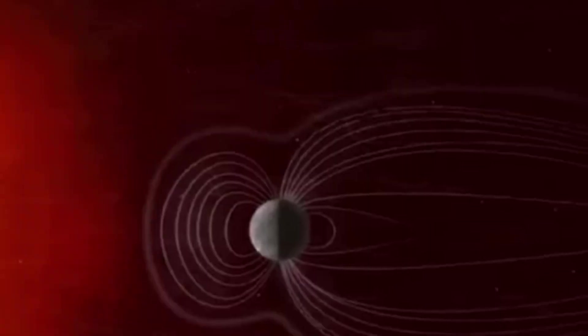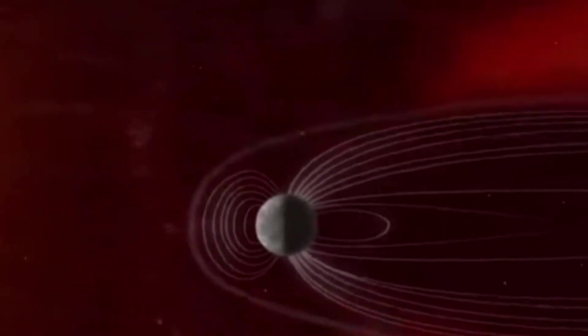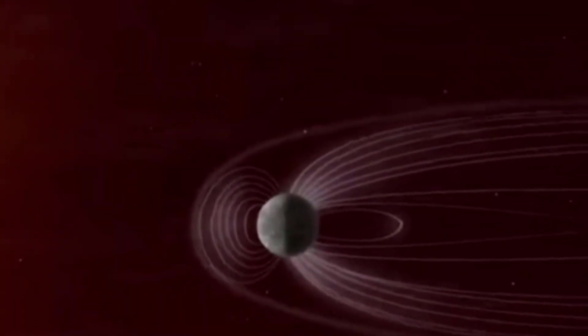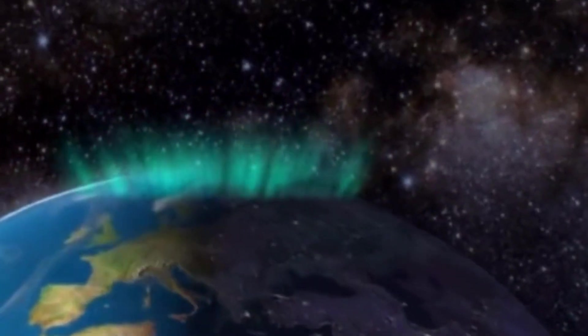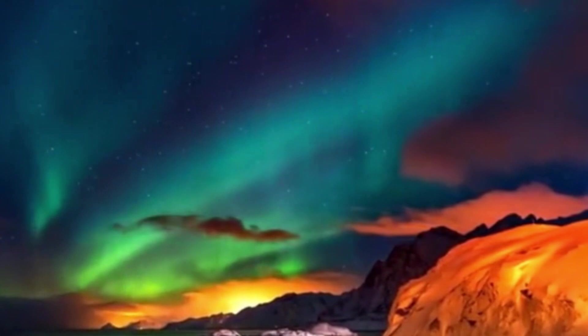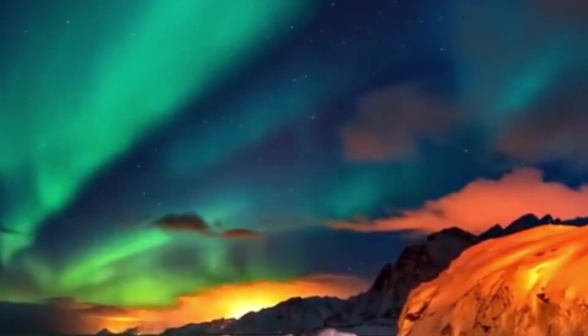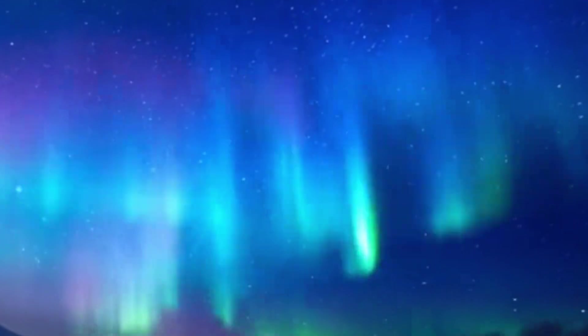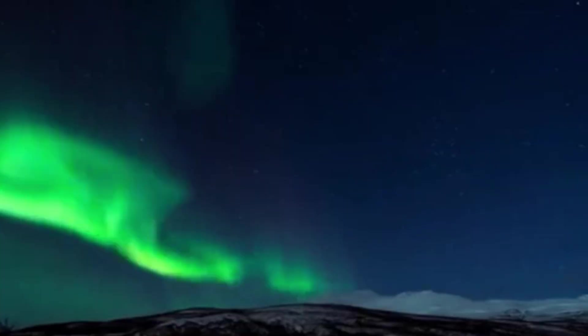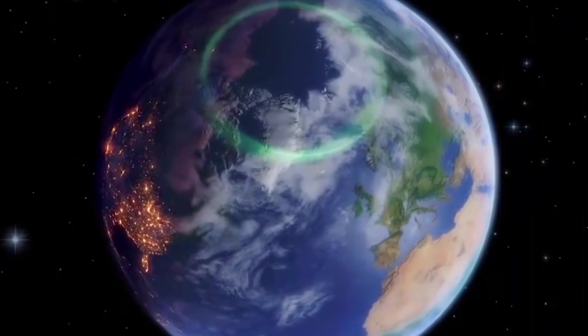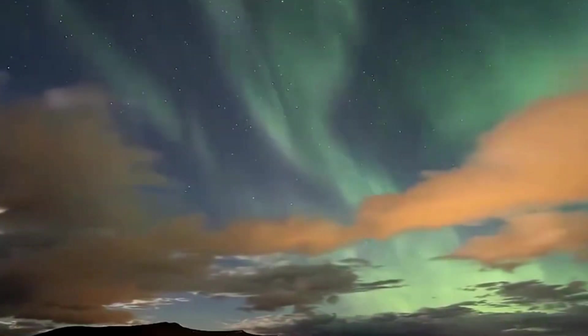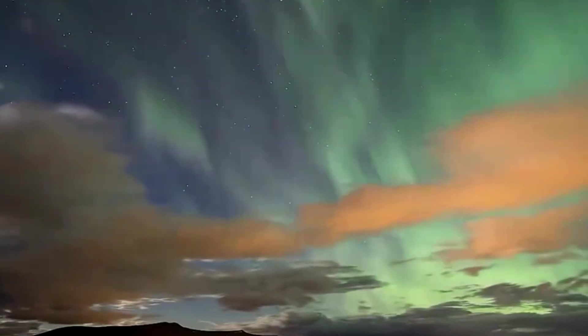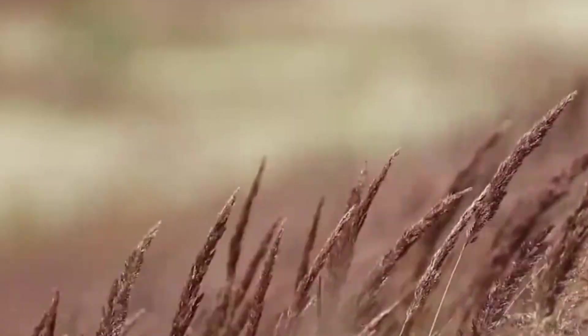But here's the part that few people ever stop to consider. This shield is not permanent. It is not a fixed, unchanging force. Deep inside Earth's core, molten iron flows and churns like a restless ocean. This movement generates the magnetic field, but it also means the field is constantly shifting. And history tells us something astonishing: Earth's poles have flipped before. Yes, North became South and South became North.